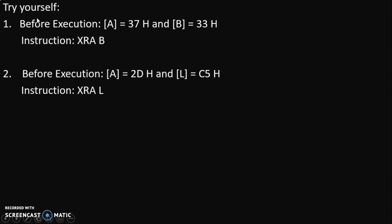Now try these examples on yourself. Before execution, the content of the accumulator is 37H and the content of the B register is 33H. We need to execute the XRA B instruction — tell me what will be the new content of the accumulator after execution of XRA B. Give your answer in the comments. Another example: before execution, the content of the accumulator is 2DH — remember D is a hexadecimal number — and the content of the L register is C5H, where C is also a hexadecimal number. We need to execute the instruction XRA L. Tell me what will be the content of the accumulator after execution of XRA L. Give your answer in the comments.